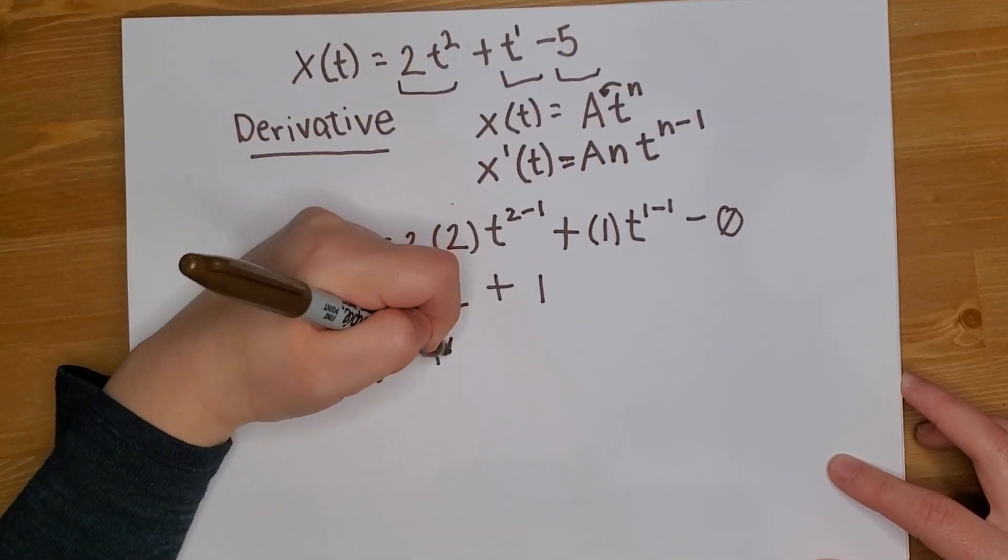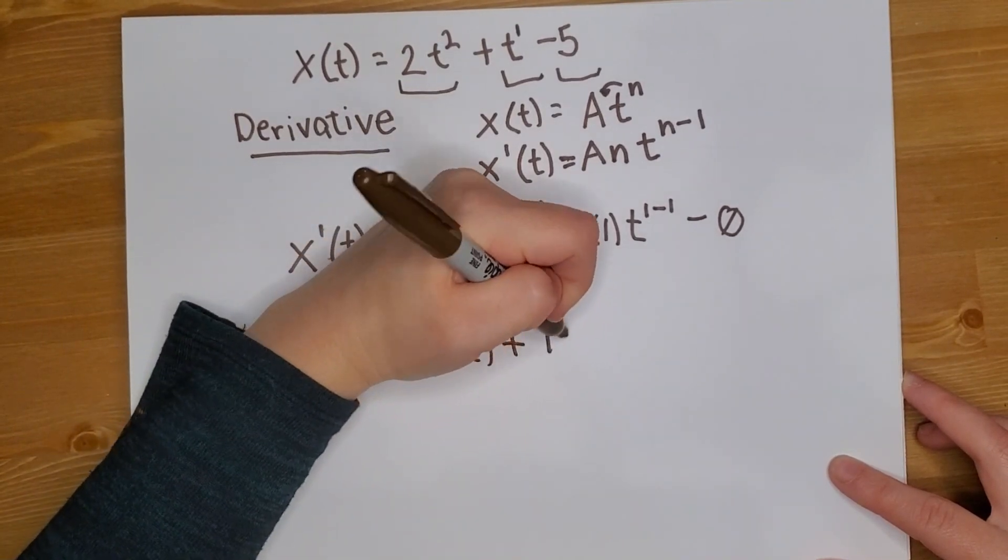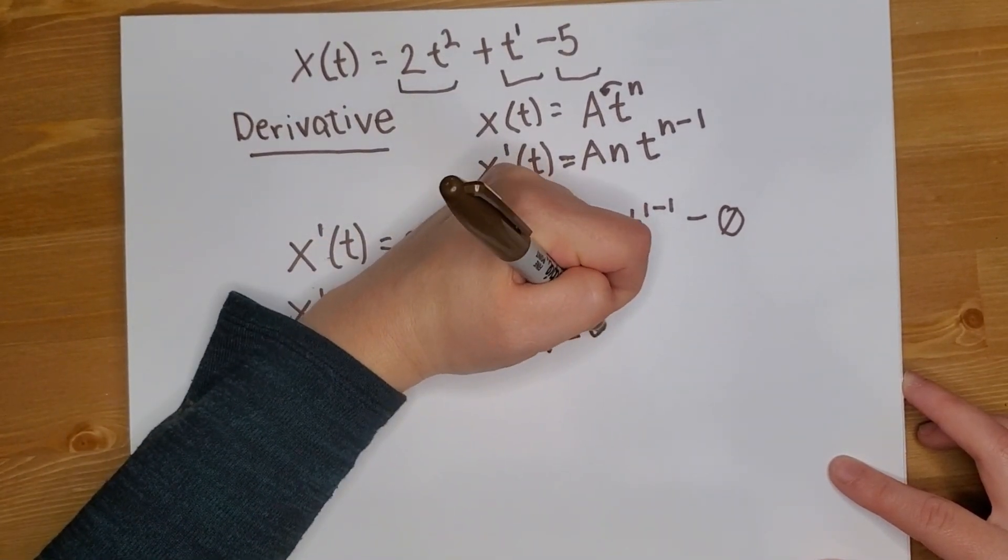So we have 4, we're just plugging in 2, because that's what we were trying to find, plus 1, we get the exact same answer.